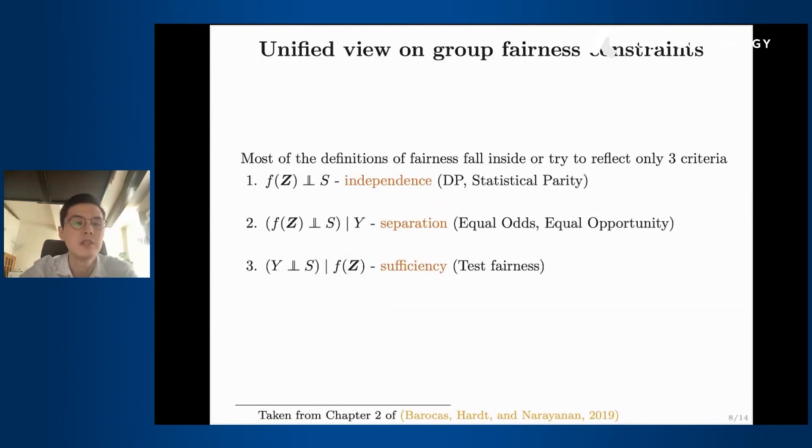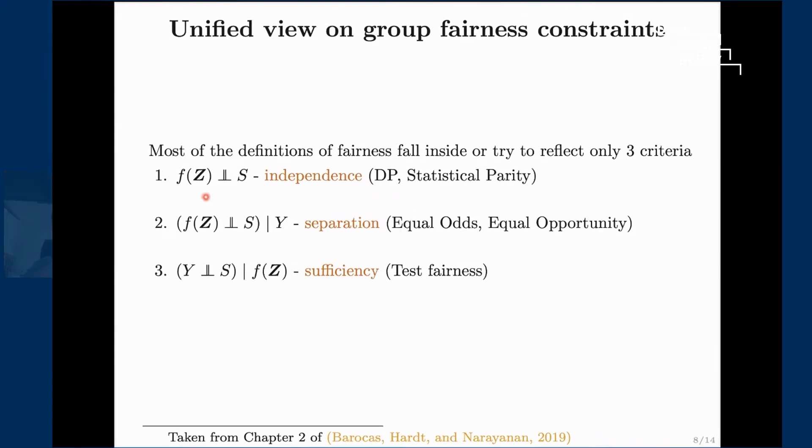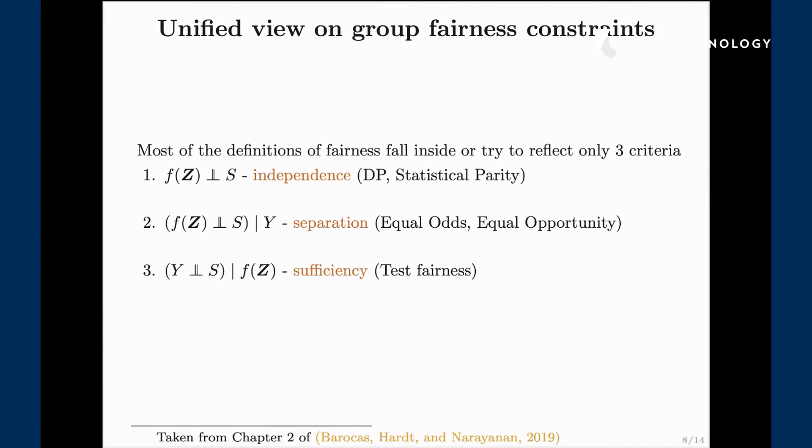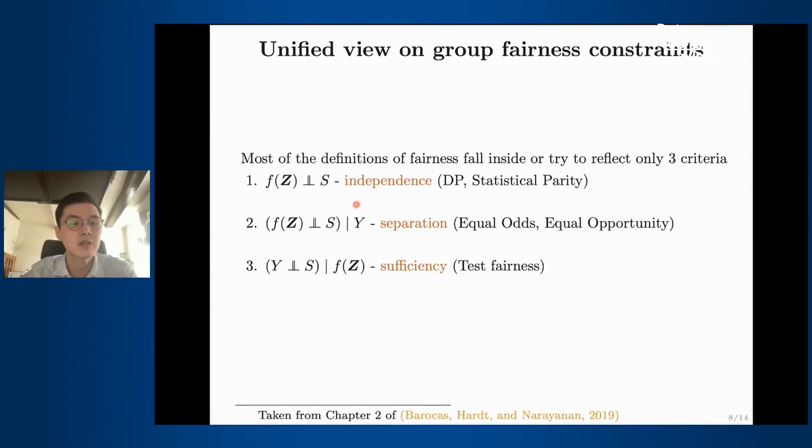The first one is independence. Here we are asking for the independence between our prediction and the sensitive attribute. It's a true statistical independence and it's a very natural constraint to ask for. If you have sensitive information we don't want this information to affect our prediction, so we want to ask for independence. Unfortunately this constraint does not take into account the labels. For instance, if the function f is fair with respect to this definition then it is fair independently from what kind of problem you're trying to solve.